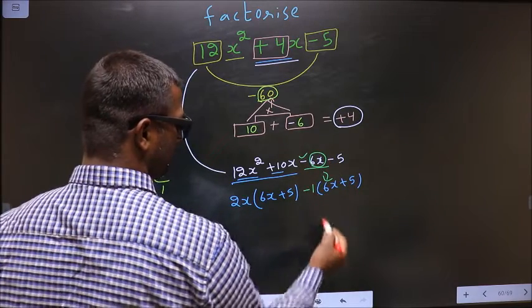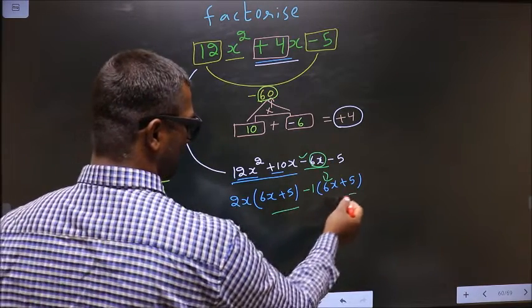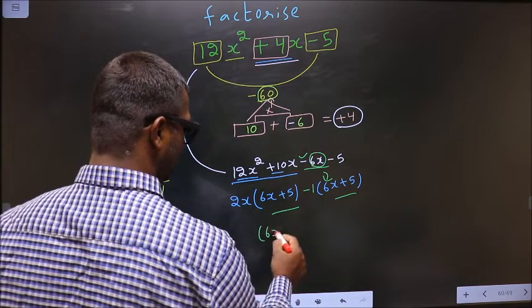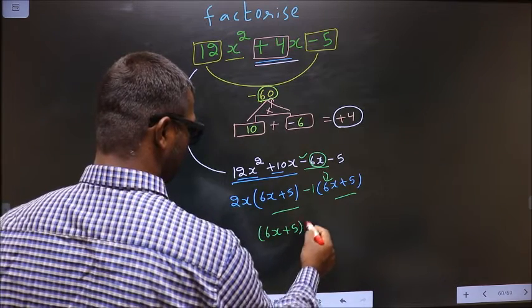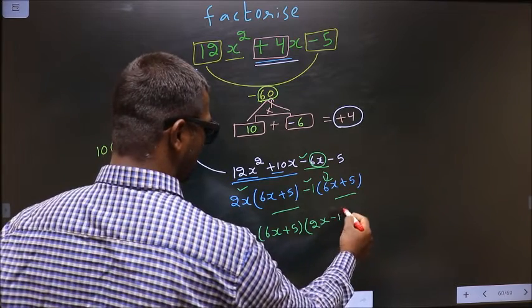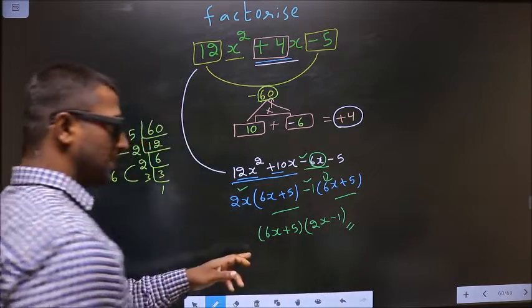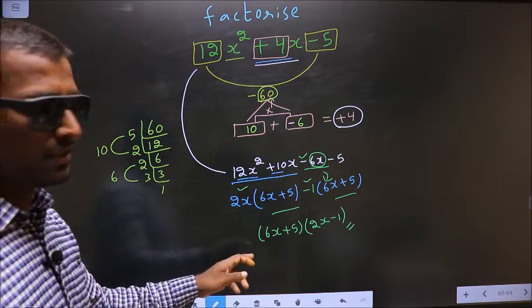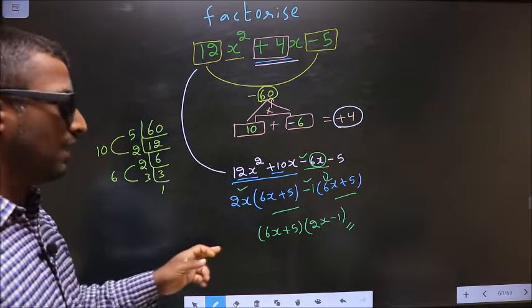Now you take out 6x + 5 common. So here you have 2x and here you have -1. This is our answer. Am I clear?